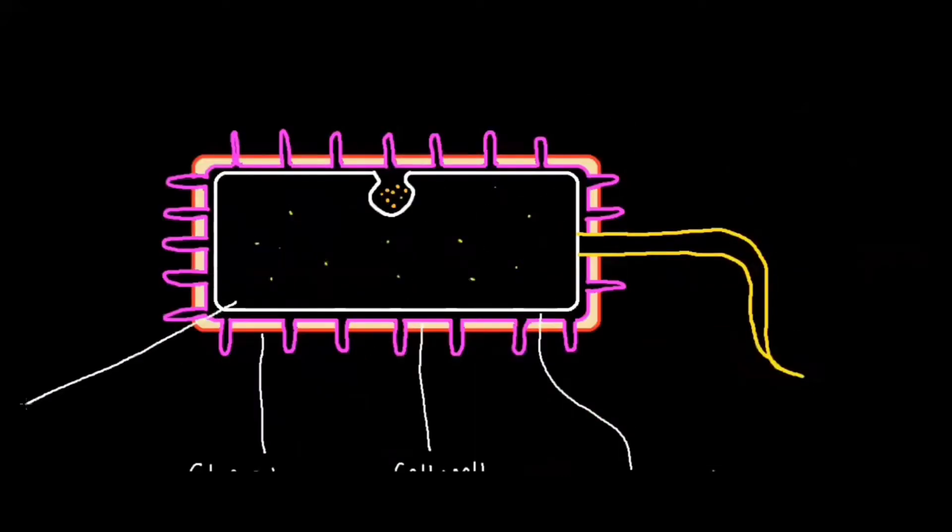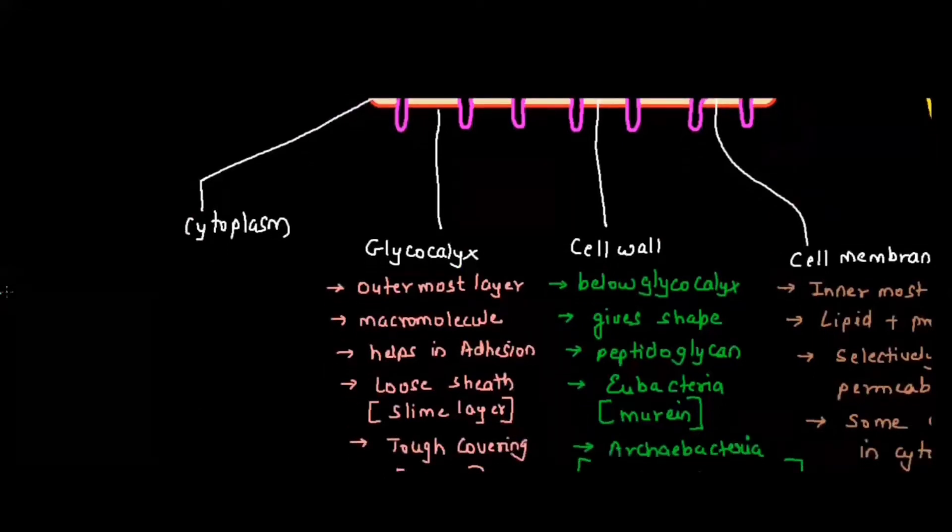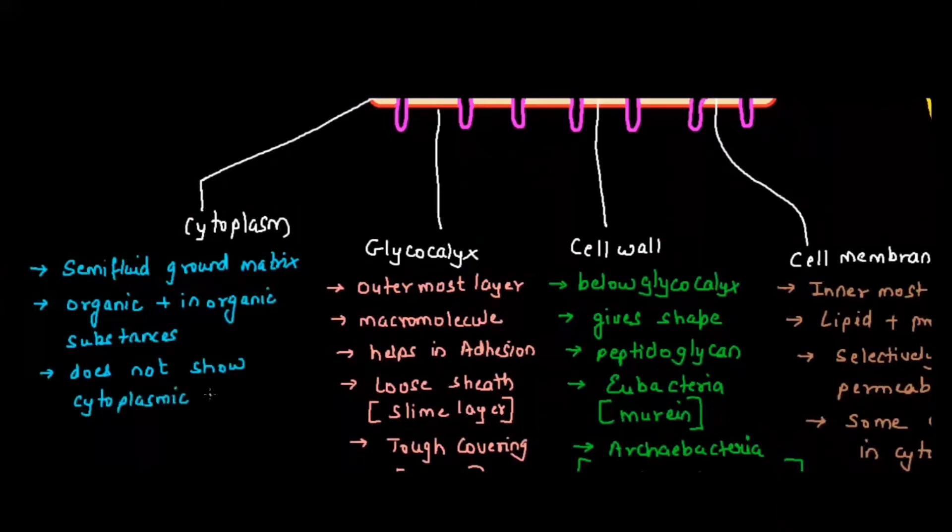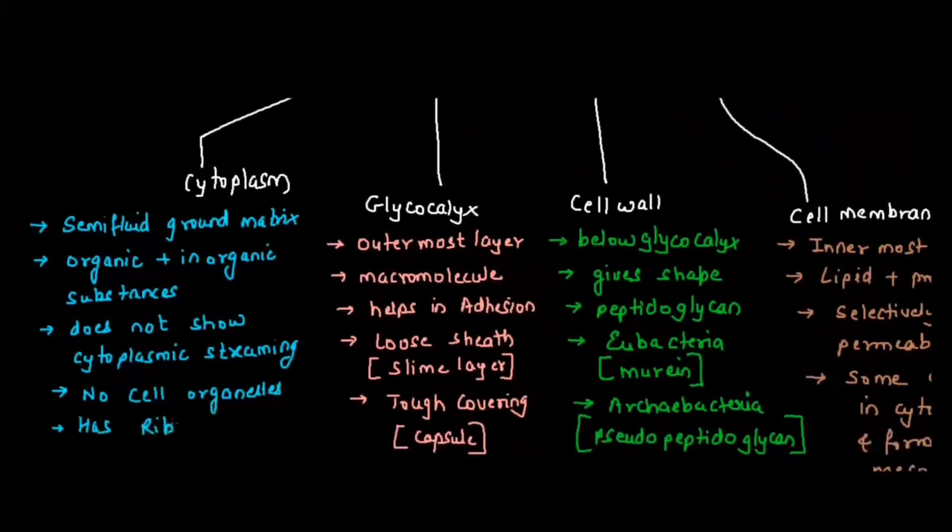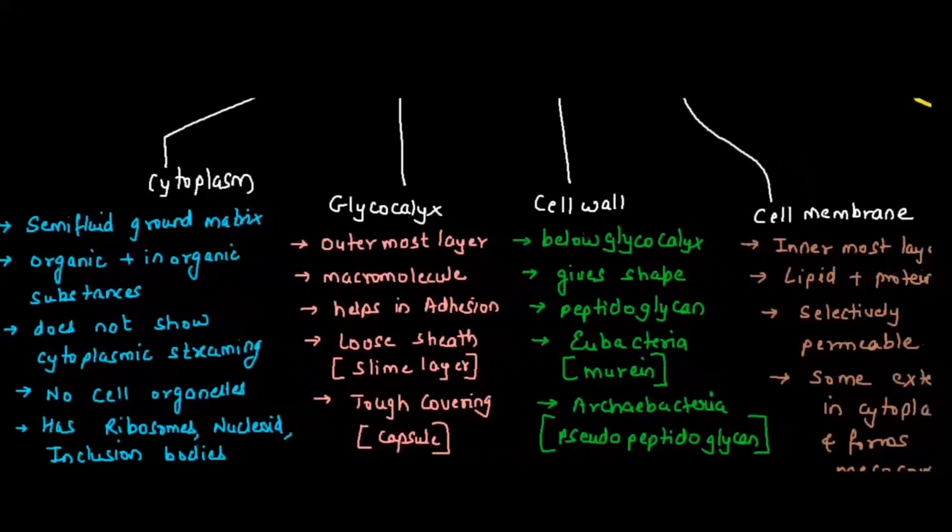This dot-dot structure represents the cytoplasm. Let's understand the cytoplasm of the prokaryotic or bacterial cell. Whenever we talk about cytoplasm, it is semi-fluid ground matrix, gel-like, made up of organic plus inorganic substances. They do not show cytoplasmic streaming, meaning there is no movement of any component from one end to another. In the cytoplasm, there is no cell organelle present. What is present are ribosomes, nucleoid, inclusion bodies, etc.